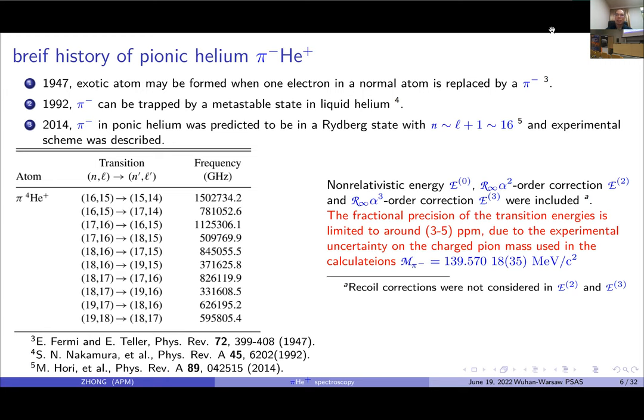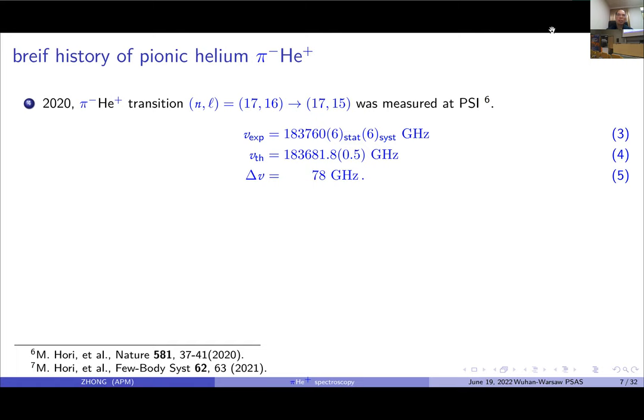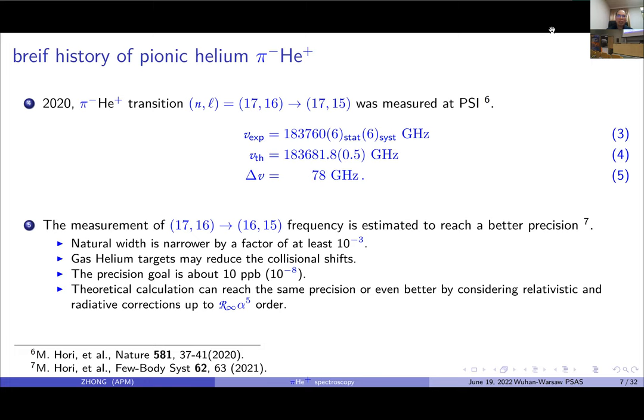Therefore, the precision is limited to around 3 to 5 ppm due to the charged pion mass value. This should be pointed out: in the theoretical calculation, recoil corrections in the leading order relativistic and radiative correction were not considered. In 2020, the first transition was measured at PSI and the difference between theory and experiment was understood as the collisional shift between pionic helium and helium ground state. They are planning to measure the narrow transition 17,16 to 16,15, and the precision goal is about 10 ppb. Therefore, we would like to present our calculation on this transition.